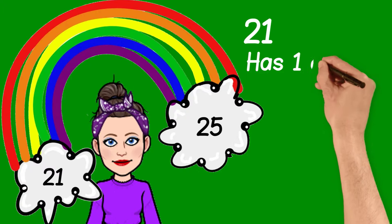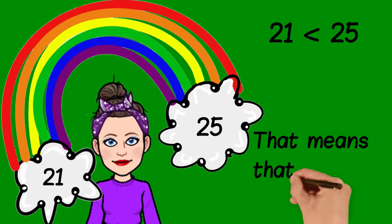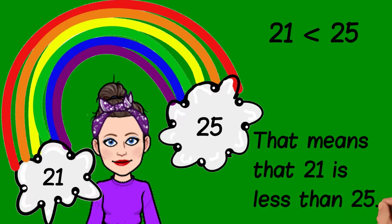21 has one one, 25 has five ones. That means that 21 is less than 25.